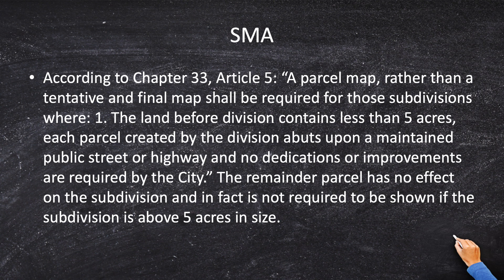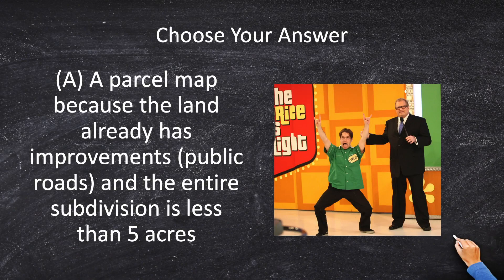There is an exception which allows parcel maps, so I chose the exception and I am going to pick A — a parcel map. I went to the Subdivision Map Act, Chapter 33, Article 5, which states: 'A parcel map, rather than a tentative map, shall be required for those subdivisions where the land contains less than five acres, each parcel abuts a maintained public highway, no improvements.' And the remainder parcel has no effect because that's not part of your new subdivision.